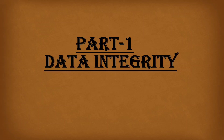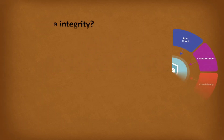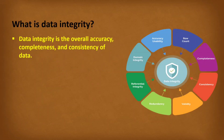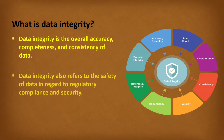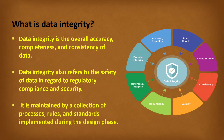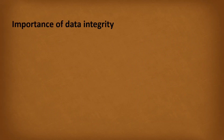Now let's move to Part 1 of data integrity. First: what is data integrity? Data integrity is the overall accuracy, completeness, and consistency of data. Data integrity also refers to the safety of data in regard to regulatory compliance and security. It is maintained by a collection of processes, rules, and standards implemented during the design phase.